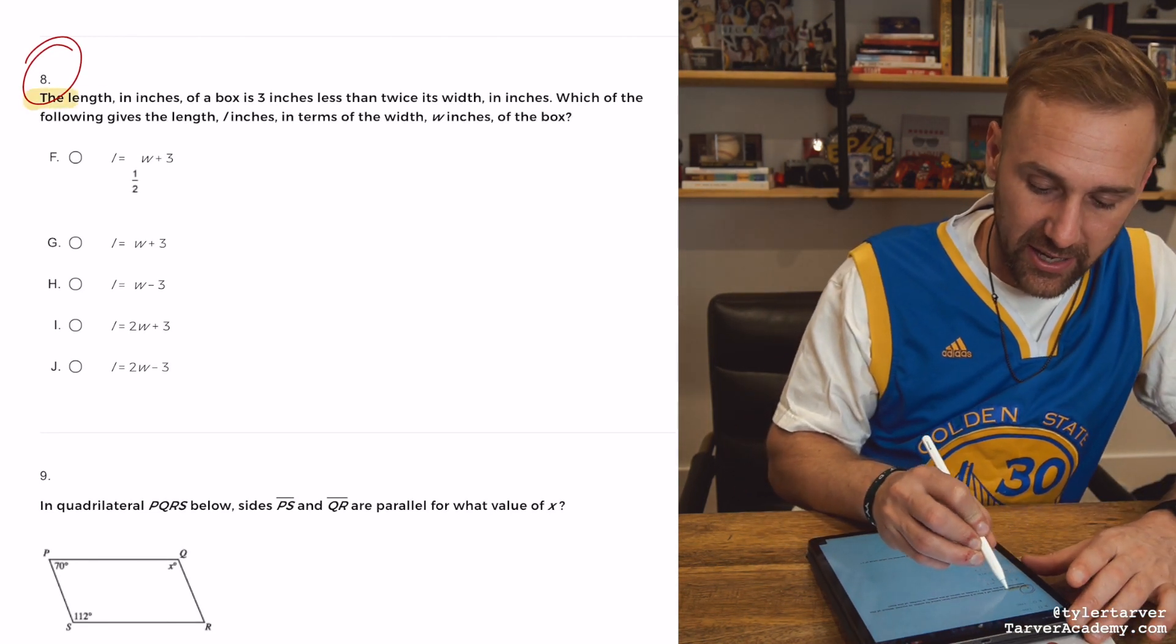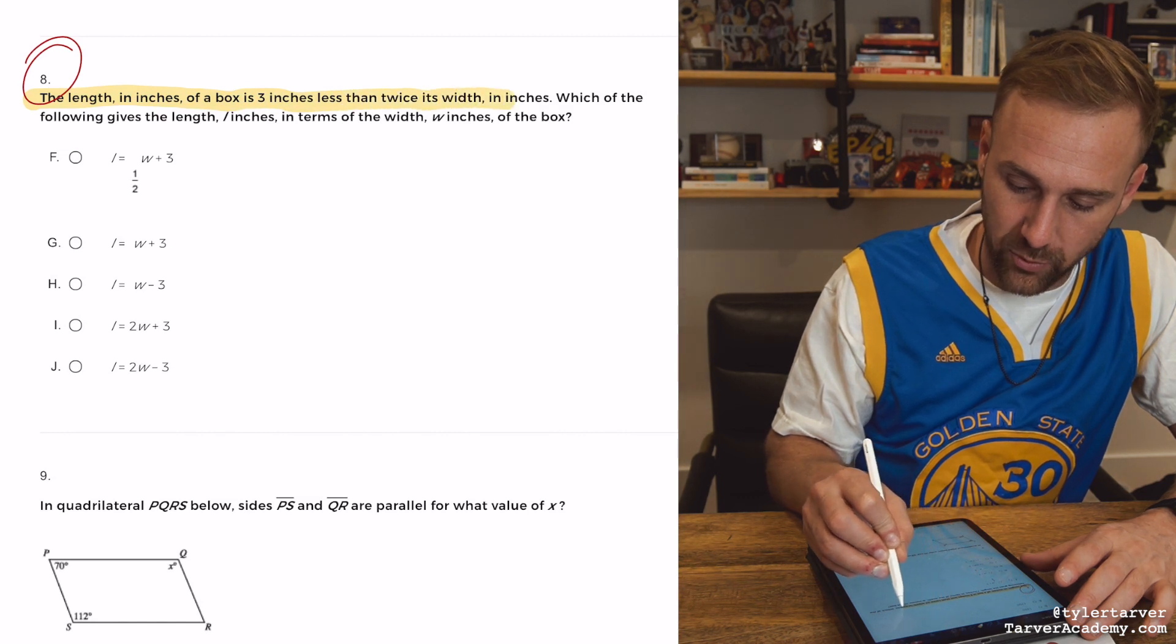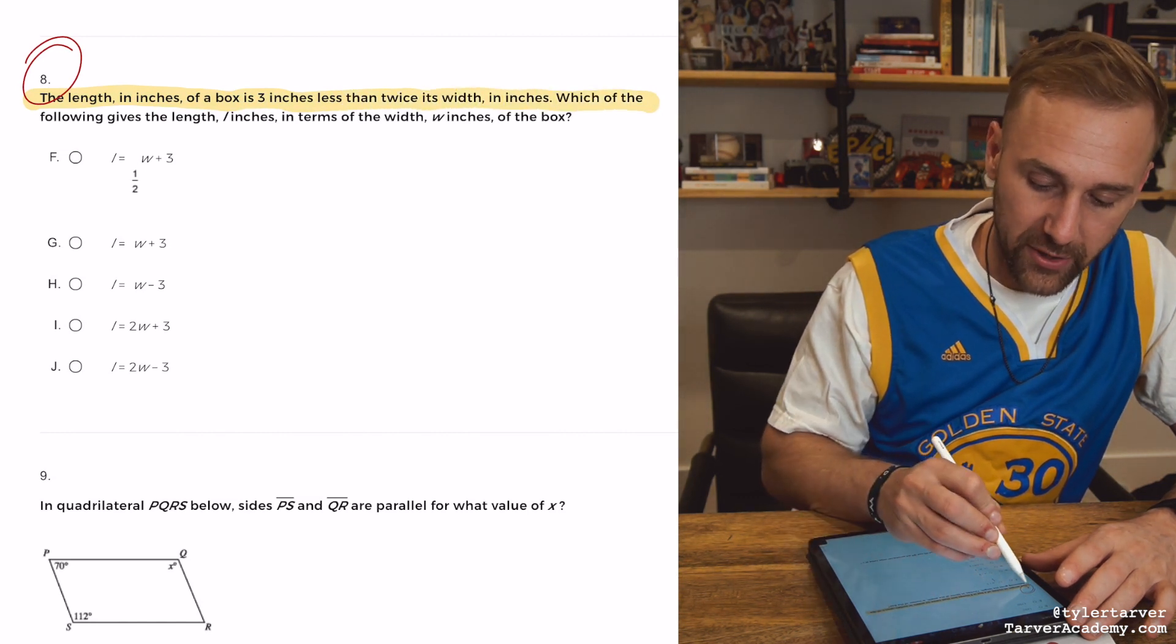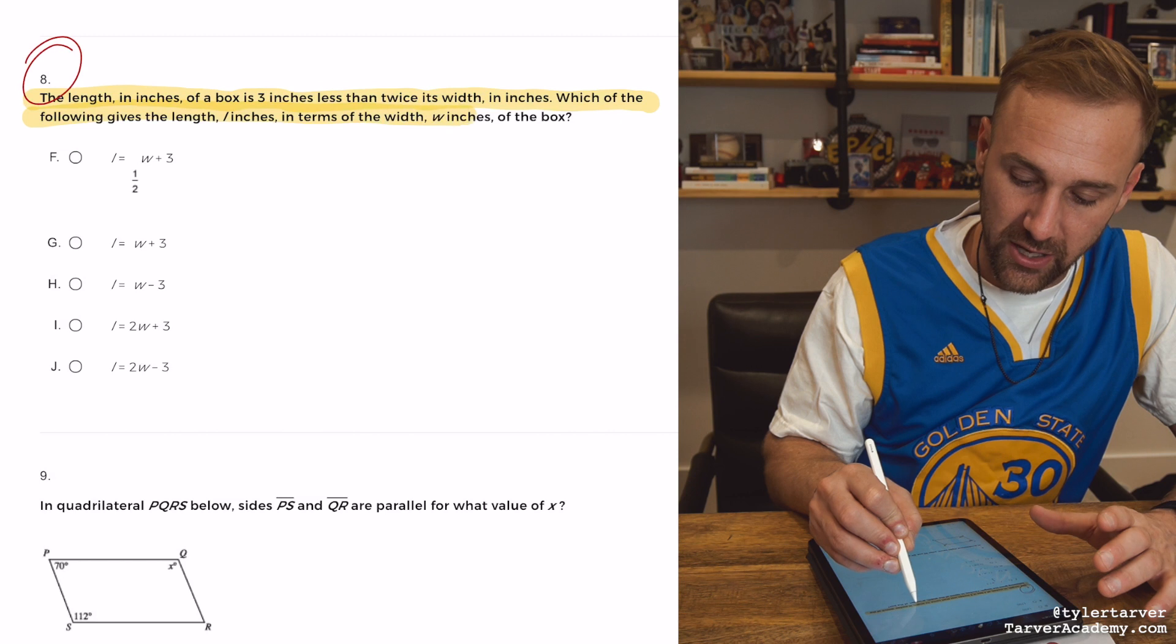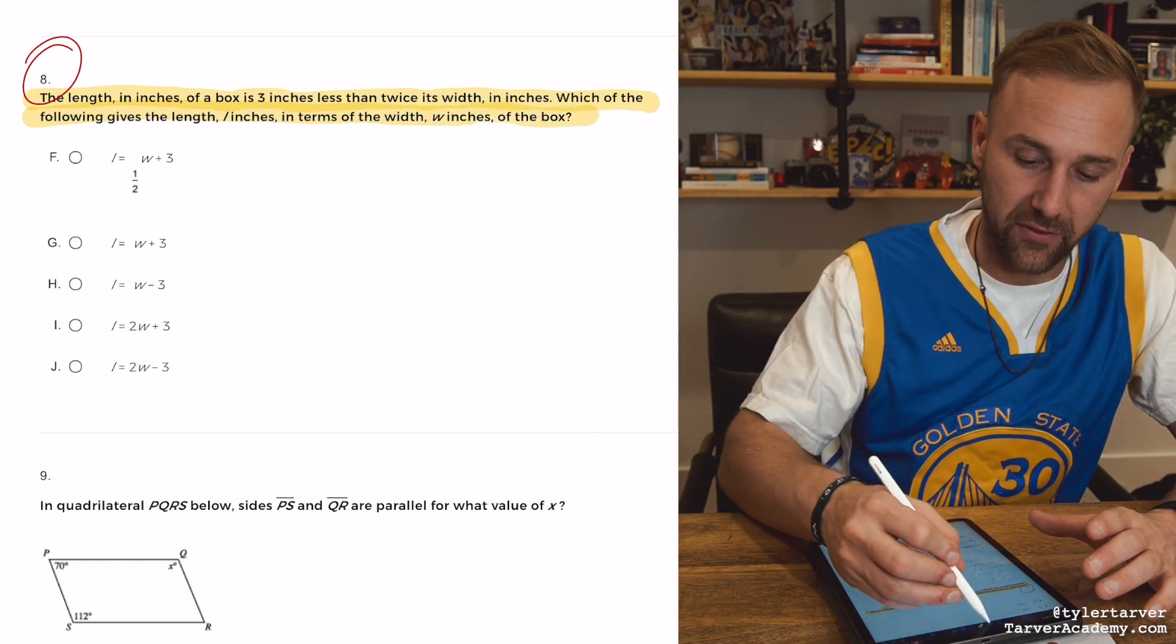It says, the length, in inches, of a box is three inches less than twice its width, in inches. Which of the following gives the length, L, in inches, in terms of the width, W, inches, of the box?